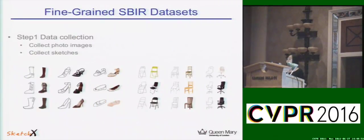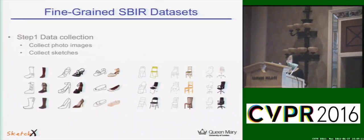Let me briefly introduce the process of collecting our new dataset. The first step is to collect photo and sketch images. Our dataset contains two categories: shoes and chairs. We selected a subset of shoe photos from the Texture Samples dataset, and collected chair photos from three online shopping websites — IKEA, Amazon, and Taobao. After this step, we recruited volunteers to draw sketches for each photo from recall, meaning for each photo in our dataset there is one exact corresponding sketch.